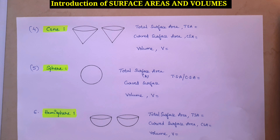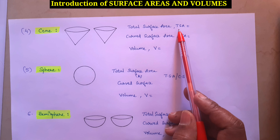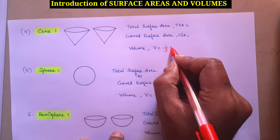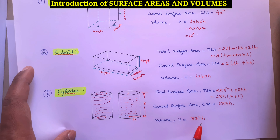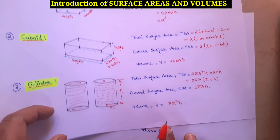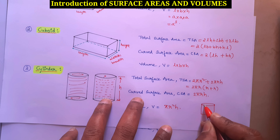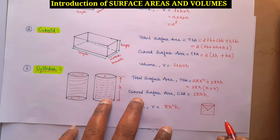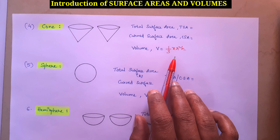The fourth figure is cone. In cone we can find three values: total surface area, curved surface area, and volume. Volume is (1/3)πR²H. Why? Because if you observe a cylinder whose volume is πR²H, a cone is one-third of that cylinder — if you take a cone inside a cylinder of the same dimensions, you get 3 such cones. That is why volume is (1/3)πR²H.